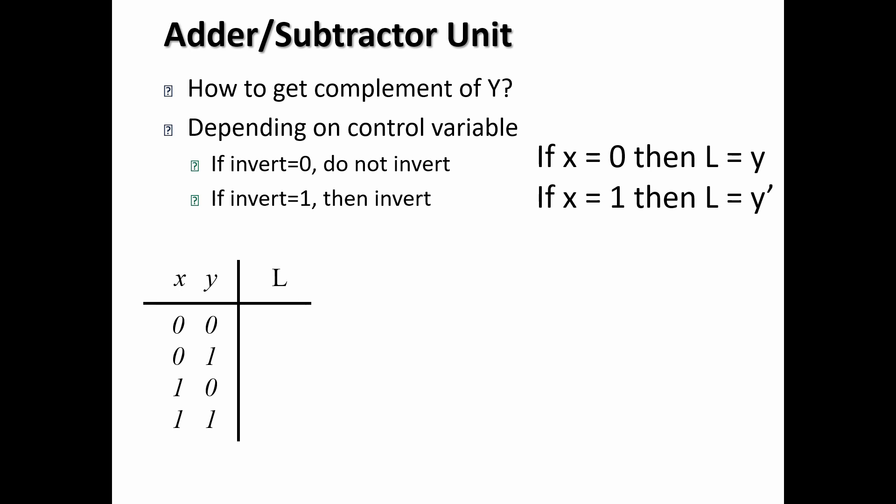So now, if we need to design for this, we can start with a truth table. So we have x and y. In this case, x is going to be our control unit. That's the variable that is going to tell us if we need to complement or not. So if we have a 0 in the x, then we leave the y alone. If we have a 1 in the x, then we complement the y.